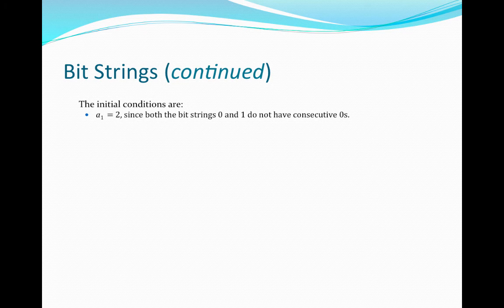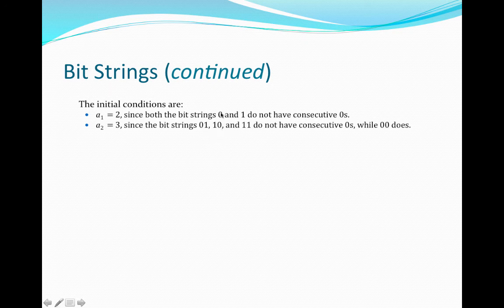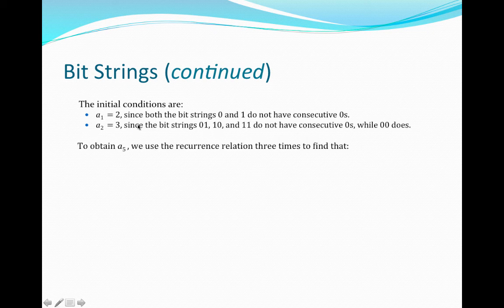For a sub 2, we consider all bit strings of length 2 without consecutive zeros. There are three: '01', '10', and '11'. The string '00' is excluded because it contains two consecutive zeros. So a sub 2 equals 3. We were also asked to determine the number of bit strings of length 5 without two consecutive zeros, so we need to find a sub 5.